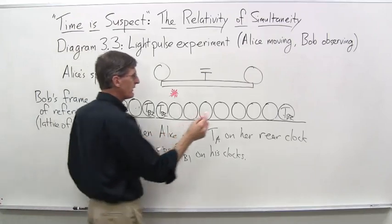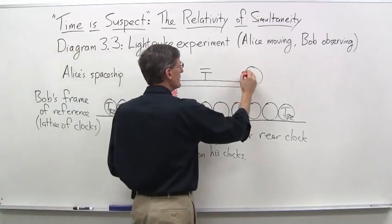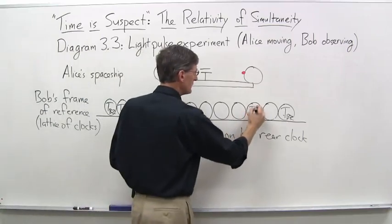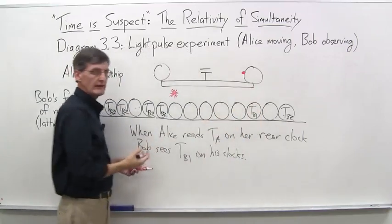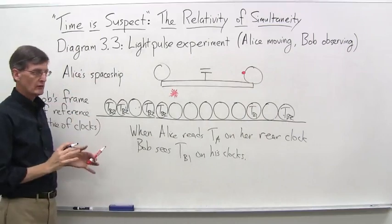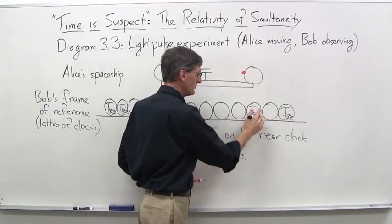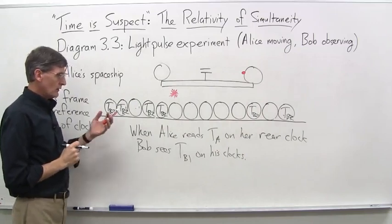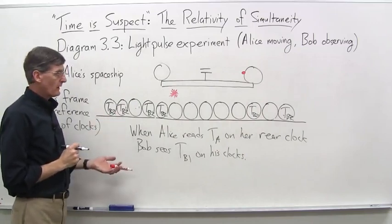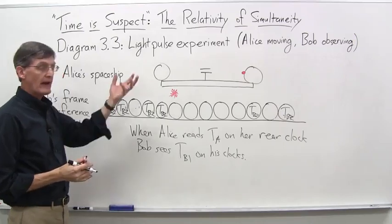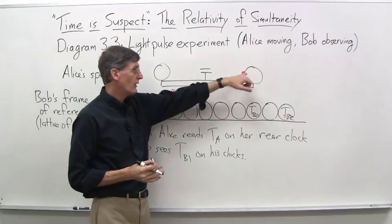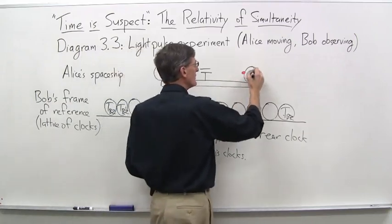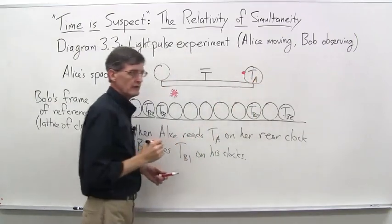And now, finally, he sees this photon hit that clock, and again, he would take a little photo right at that instant, and say, okay, my clocks all read, not TB1, sorry about that, TB2 at that instant in time. So, what else do we know about that instant in time? Well, we know that Alice, when she takes a photo, when that photon hits that clock, her clock reads T sub A.